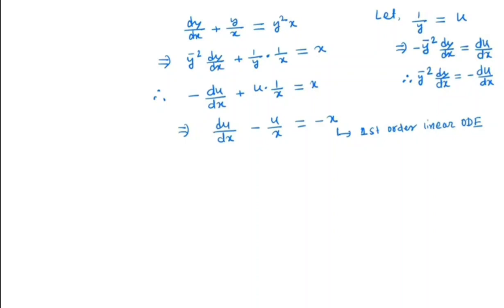So we will solve this equation by finding the integrating factor. Here, integrating factor I(x) will be e^(∫-1/x dx) which is e^(-ln x). This can be written as e^(ln x^(-1)) which is the same as x^(-1).